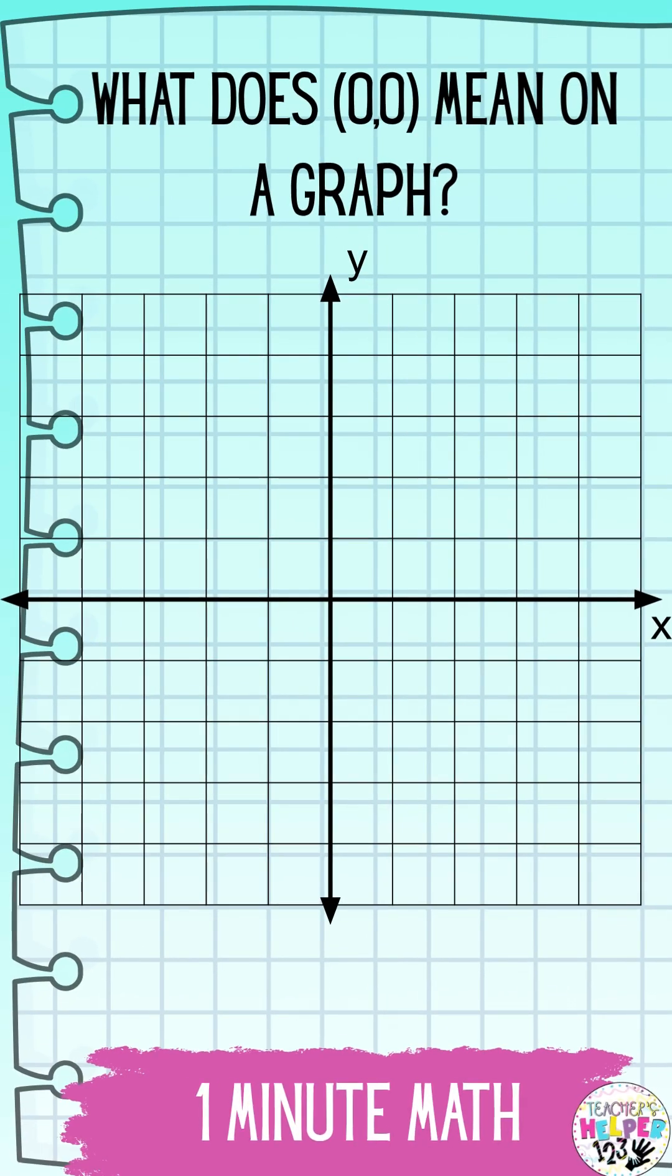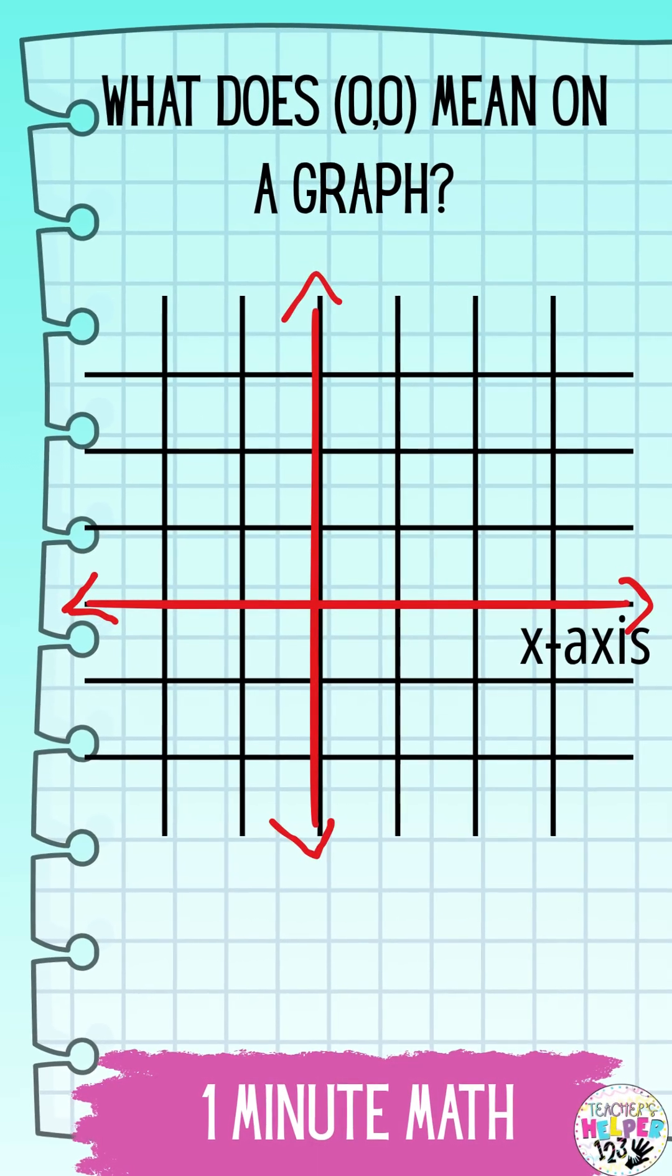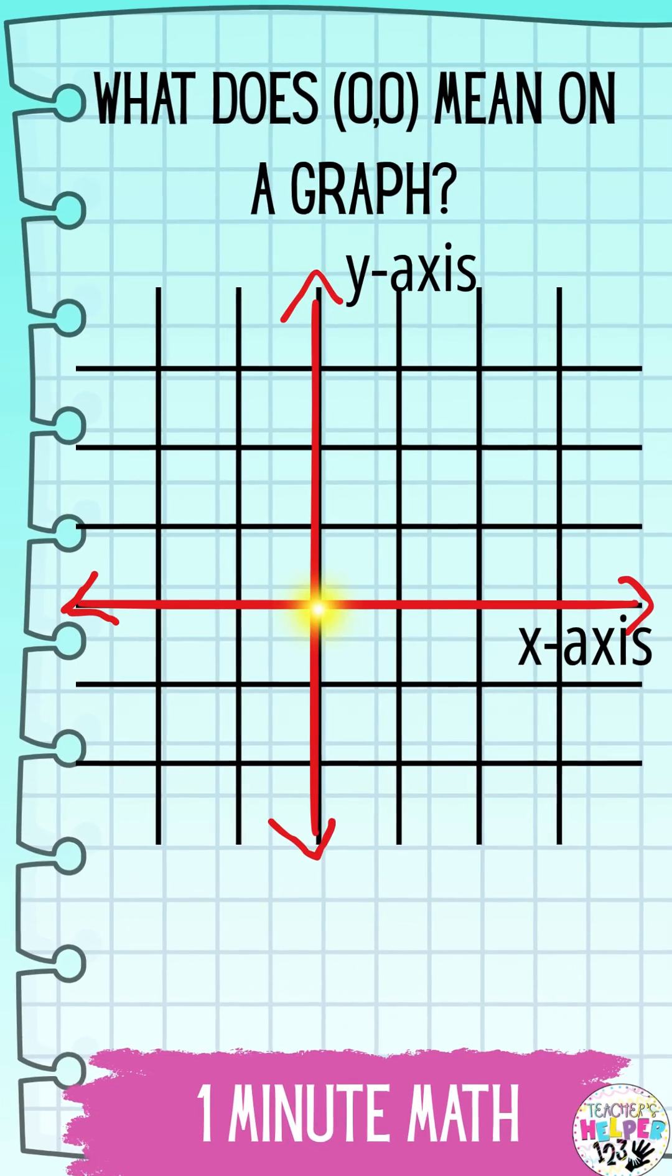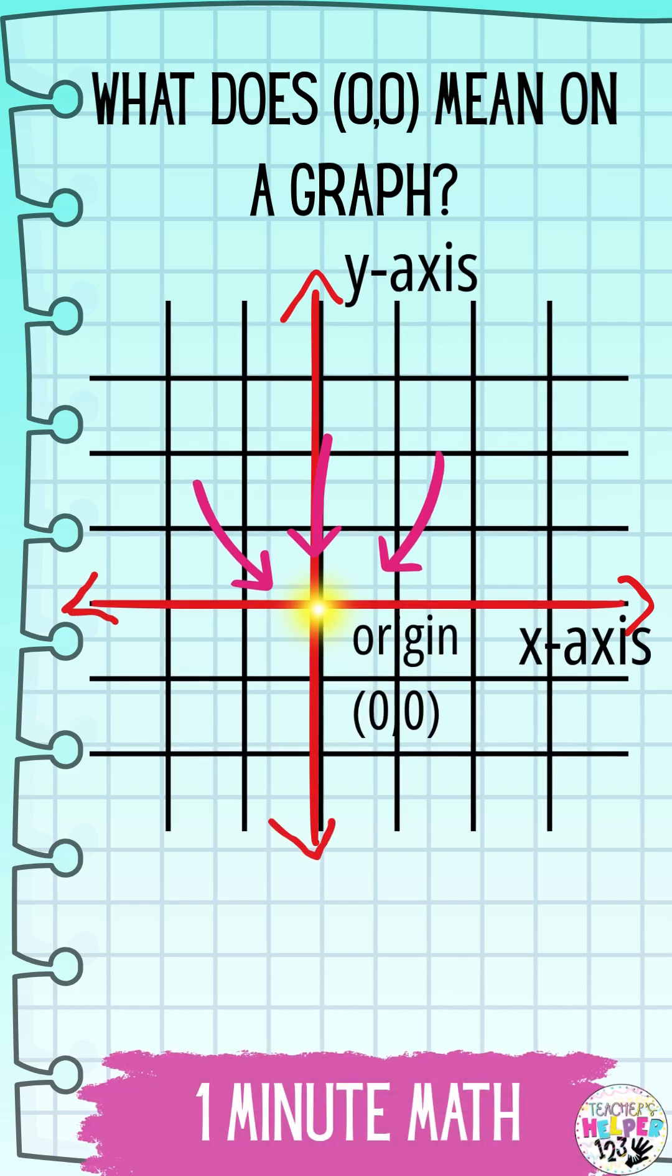Have you ever seen a graph and wondered what that point right in the middle, (0,0), really means? That's called the origin. It's where the x-axis and the y-axis cross, the starting point for everything on a coordinate plane.